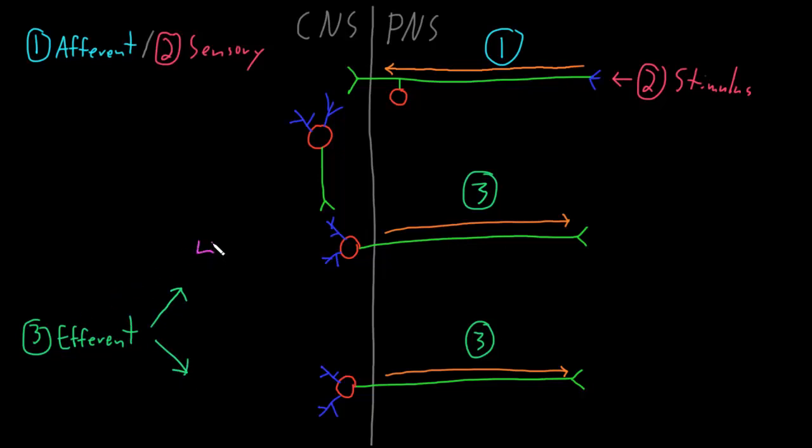There are two main kinds of efferent neurons. The first we call motor neurons—motor, which means movement. These are efferent neurons that control skeletal muscle, the main type of muscle that's attached to our skeleton that moves us around. These motor neurons are also called somatomotor neurons, or neurons of the somatic nervous system.